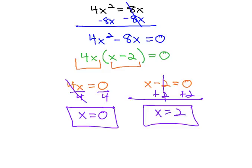We found those solutions using the same method we always do when there is an x squared in the problem. First, make the equation equal to 0, then factor, in this case with the GCF, and finally, set each factor equal to 0.